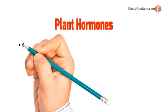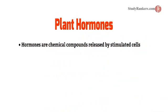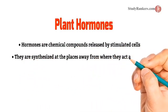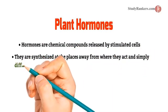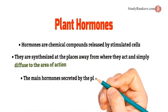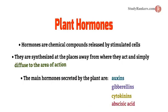Now we are going to study about plant hormones in detail. Hormones are chemical compounds released by stimulated cells. They are synthesized at places away from where they act and simply diffuse to the area of action. The main hormones secreted by plants are auxins, gibberellins, cytokinins, and abscisic acid.